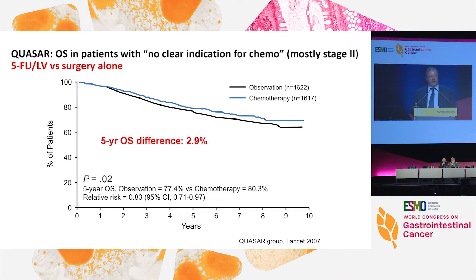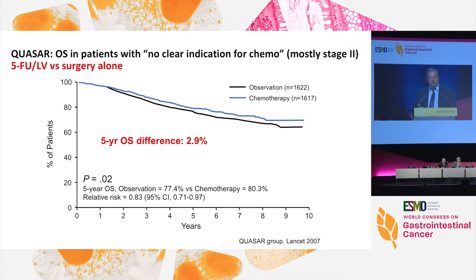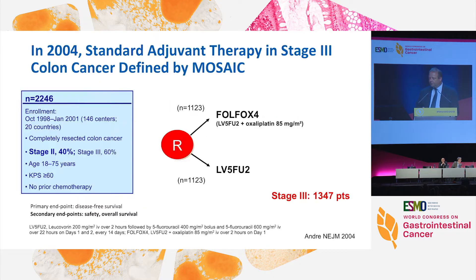What do we use as basis for recommending that stage two patients should be treated with adjuvant therapy? The only really randomized study we have is the QUASAR one study, which is somewhat historic. The overall survival difference after five years was marginal at best — around three percent. We also know that not all of these patients were truly stage two, because the lymph node yield was not optimal by today's standard threshold of 10 to 12 nodes.